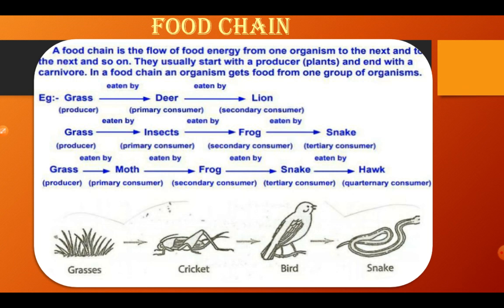A food chain is the flow of energy from one organism to the next and to the next and so on. They usually start with a producer, which is a plant, and end with a carnivore. In a food chain, an organism gets food from one group of organisms. For example, grass is a producer which is eaten by a deer, which is the primary consumer. The deer is then eaten by a lion, which becomes the secondary consumer.